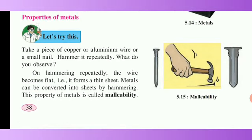Properties of metals: On hammering repeatedly, a metal wire becomes flat and forms a thin sheet. Metals can be converted into sheets by hammering. This property of metals is called malleability. When you hammer a metal like copper, the wire becomes very flat and forms a very thin sheet. So malleability is the name given to this property.